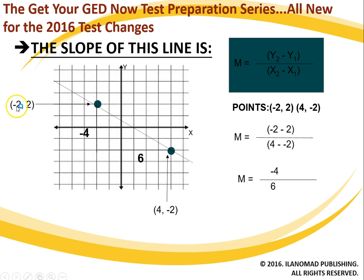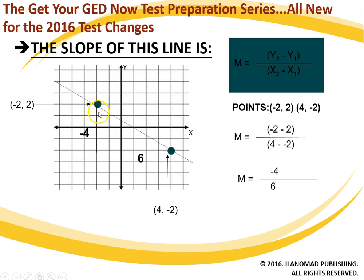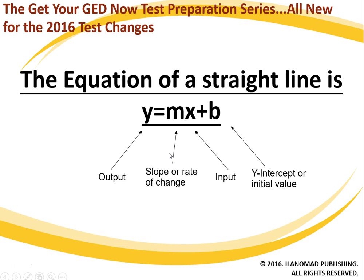So the formula says subtraction, and this number might have a negative to it — it does — so I put negative two right there. It's quite simple. And then if you've seen my other videos on positive and negative numbers, you'll know that a minus and a minus gives us a positive, so that's going to be six. So minus four over six. Go down four — one, two, three, four — and positive six over — one, two, three, four, five, six. And so that's how we find the slope of a line.